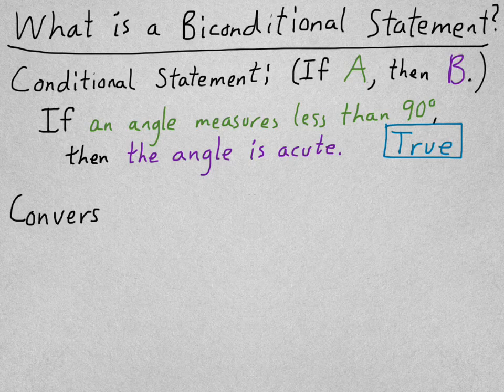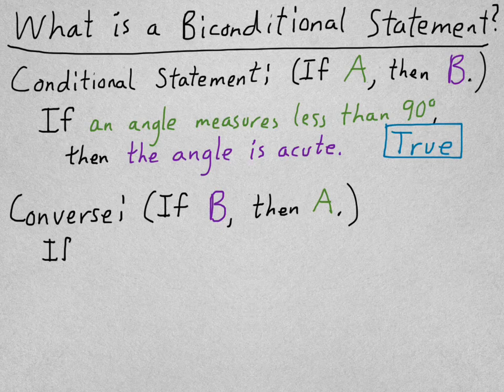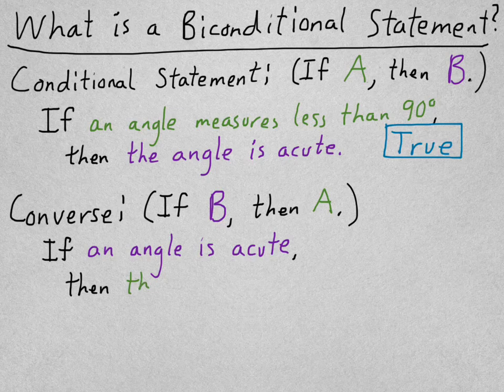And we also know what a converse is. So that changes it to if B then A, so that would be if an angle is acute, then the angle measures less than 90 degrees.